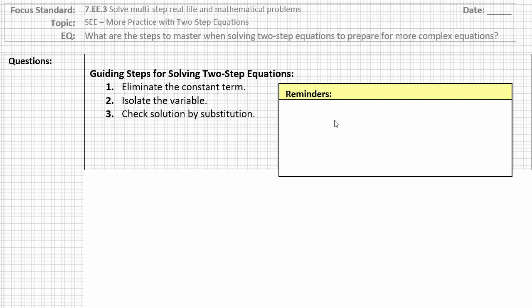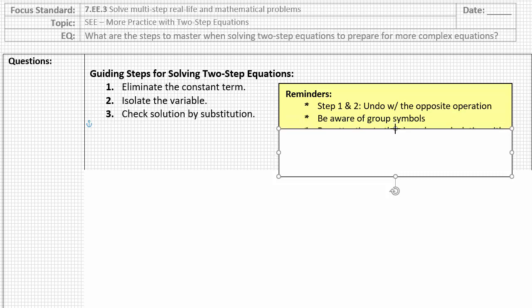With keeping these steps in mind, there are definitely some reminders that I want to make sure that we are writing down in our notes. The first is that in these first two steps where you're eliminating the constant term and then isolating the variable by undoing the coefficient, you want to make sure that you're undoing with the opposite operation. Whatever operation is being stated in the equation, you are doing the opposite. You want to make sure that you're being aware of grouping symbols. This could be parentheses or brackets, as well as fraction bars where you have more than one thing happening in the numerator or the denominator. When you see those grouping symbols, it's just kind of a red flag to proceed with caution.